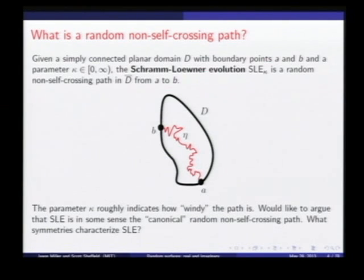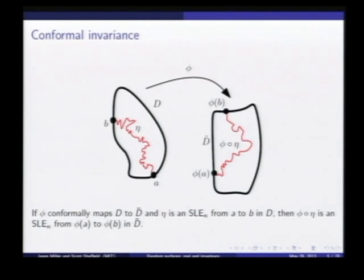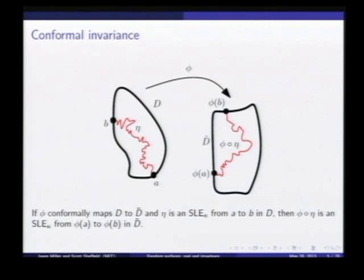We'd like to argue that these SLEs are in some sense the canonical random non-self-crossing path. What symmetries characterize SLE? First, we have conformal invariance, just like we had with Brownian motion. If you take a conformal map phi from one domain D to another, then the image of this path will be an SLE in the new domain. So if I define it in one domain, I have a definition in any other domain because I can just apply a conformal map.